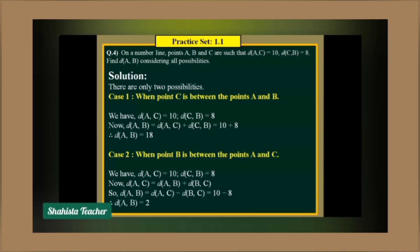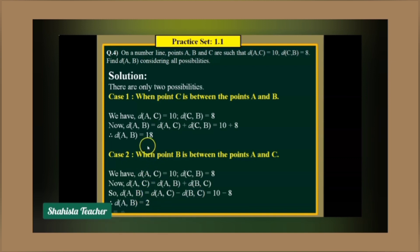In this way we solve question number 4 of practice set 1.1. If we add AC and CB we get 18; if we subtract, we get 2. So the two possible values of distance of AB are 18 and 2. Let's now solve the other questions.